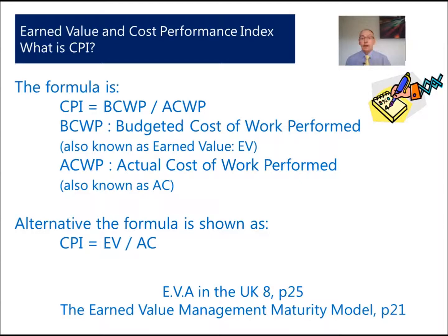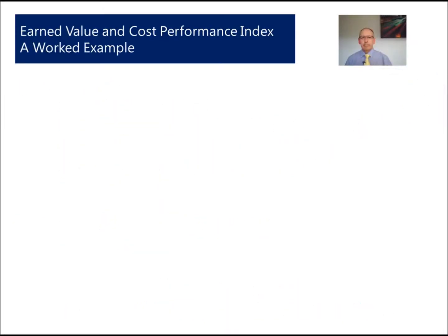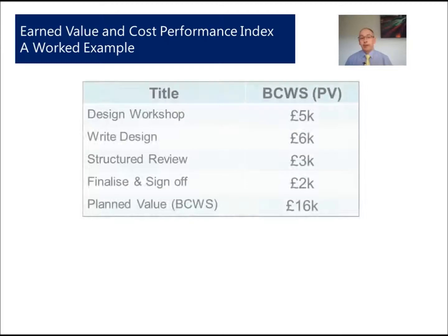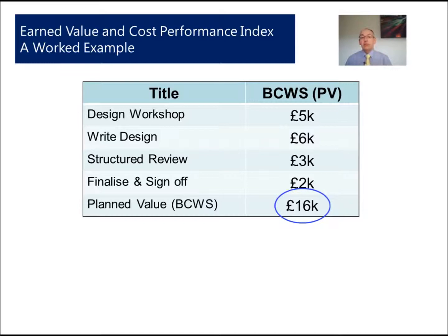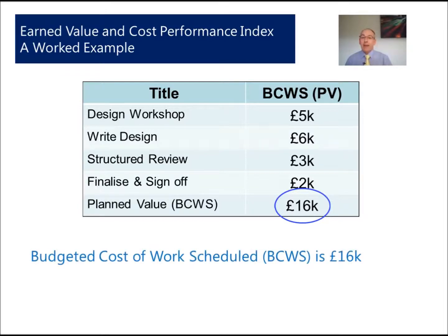Taken from Steve Wake's book EVA in the UK, an alternative formula that Ray Stratton identifies in his book The Earned Value Management Maturity Model is that CPI equals EV divided by AC. In our worked example, we assume we need to do some design work with a budget of five thousand pounds for the design workshop, writing the design, a structured review, and finalizing — giving us a budgeted cost of work scheduled, or planned value, of sixteen thousand pounds.